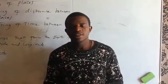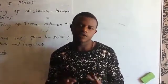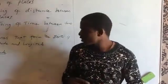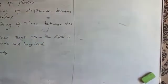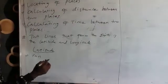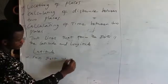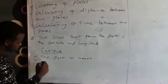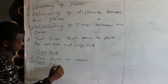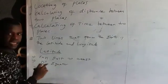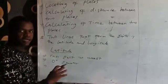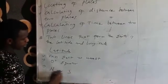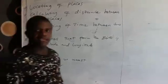The latitudes either have the north or the south sign. These lines run from east to west, and the latitude which is zero degrees is called the equator. The latitudes either have the north sign or the south sign.